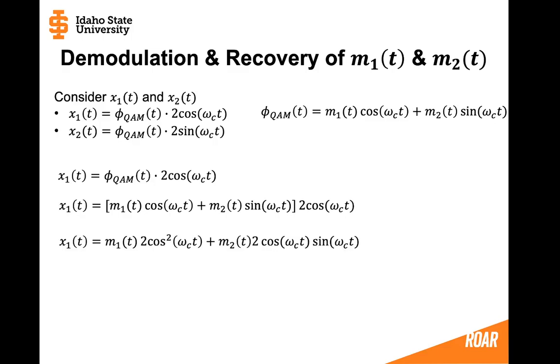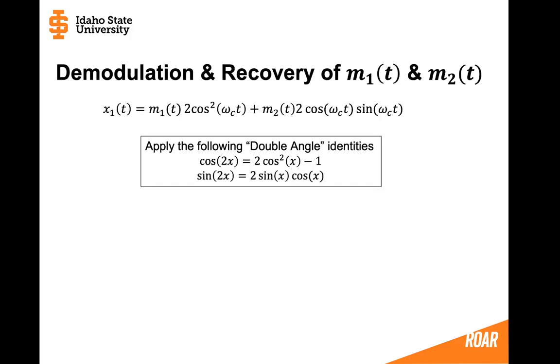Now we have a few terms including one with a cosine squared term. So let's consider the double angle identities that we see below so that we can simplify this even further.